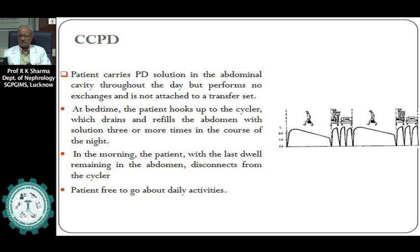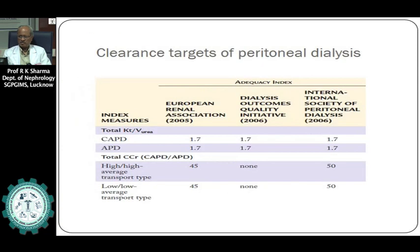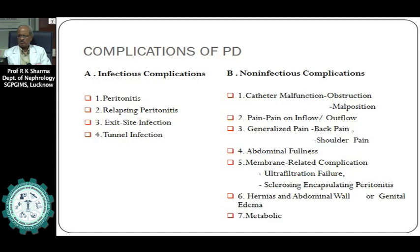Peritoneal dialysis protocols include continuous ambulatory peritoneal dialysis (CAPD), the most common, with three to four exchanges done every day. Automated peritoneal dialysis uses a cycler or machine during the night, performing 10 to 15 liters of PD, with one daytime exchange using icodextrin-containing PD fluid. Hybrid regimes combining both protocols are also possible. In CAPD, three exchanges are done during the day and at night the PD fluid is left in the abdomen for 8 to 10 hours; in the morning the patient drains it out.